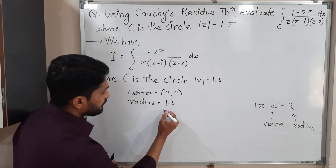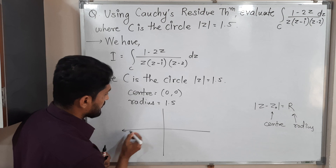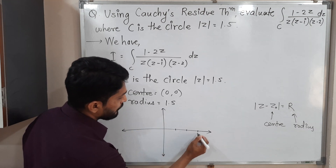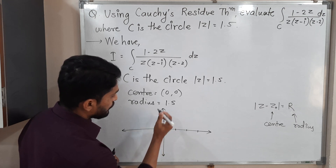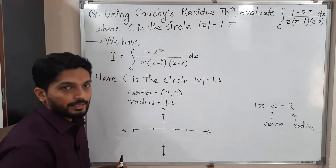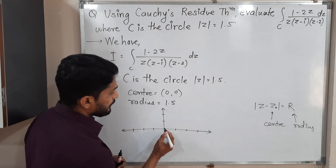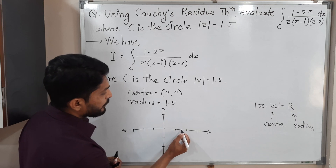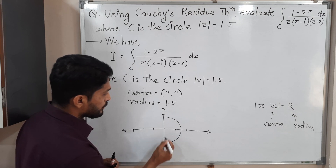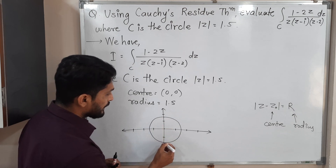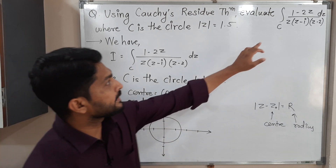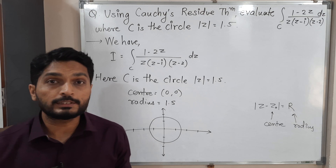Let us draw the circle. I am drawing the imaginary axis and real axis with some scaling. Center is (0, 0) and radius is 1.5, so the circle extends to about 1.5 units. Drawing the circle with center (0, 0) and radius 1.5, we get this circle. Now we have to solve this integration with the help of Cauchy's residue theorem.